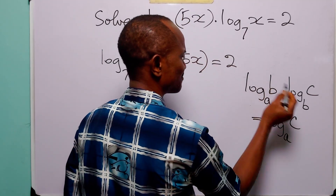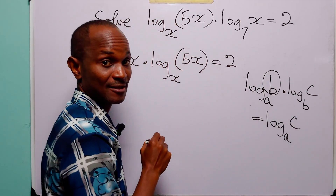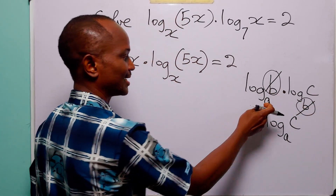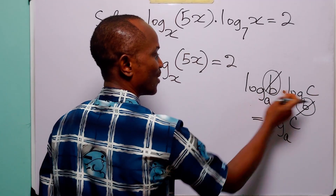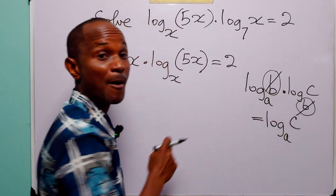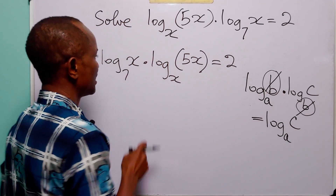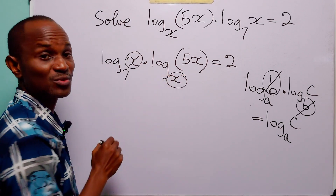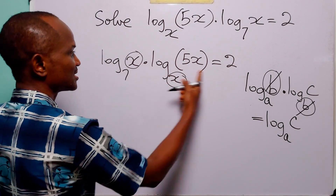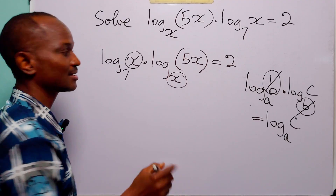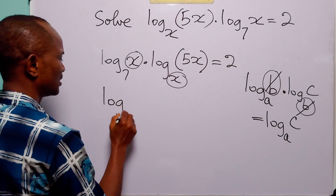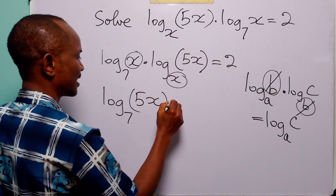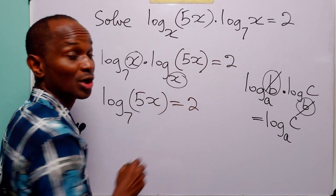This identity tells us that when the inner bases match, we can cancel them and take the outer base and argument. In this case, both terms share x as the inner base, so the left hand side simplifies to log base 7 of 5x, and this is equal to 2.